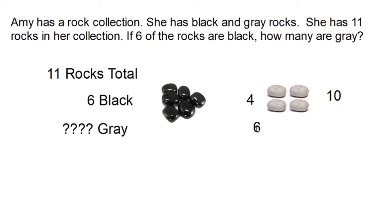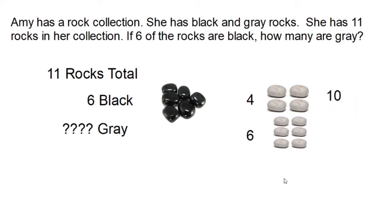So I'm going to guess six rocks. Now I'm going to check again. New guess, new check. One, two, three, four, five, six, seven, eight, nine, ten, eleven, twelve. Well, twelve is too many. Ten is too few when guessing four, and twelve is too many when guessing six. That means I know my answer has to be more than four and less than six.